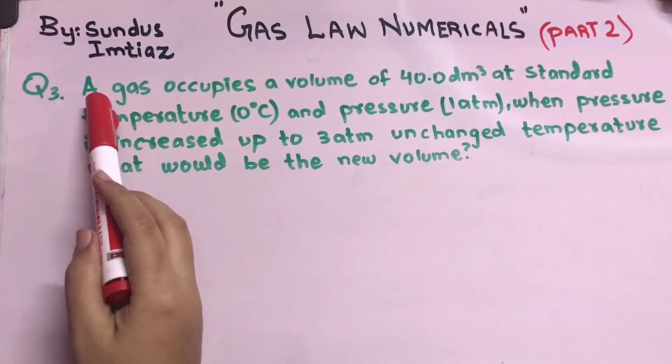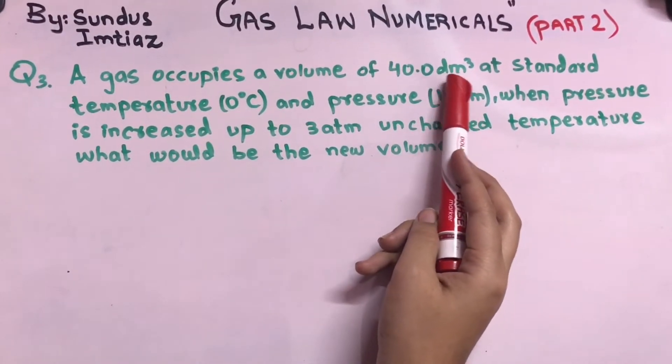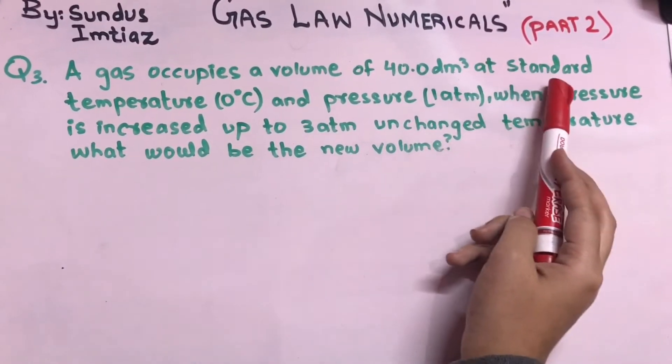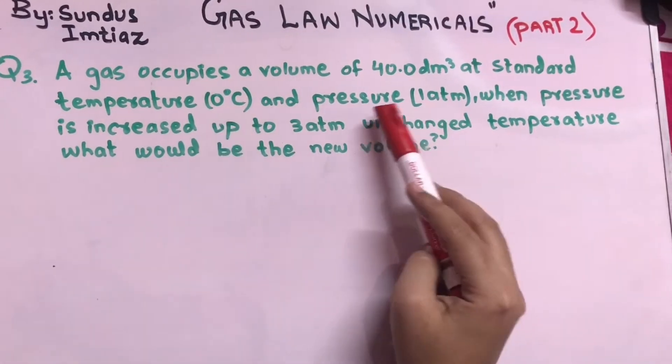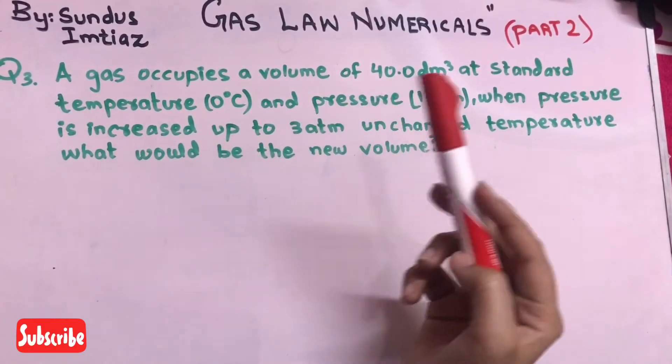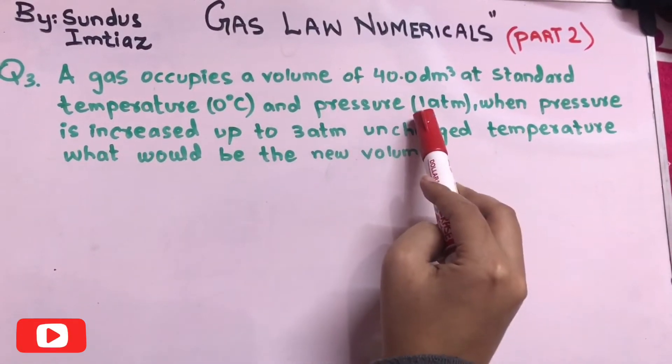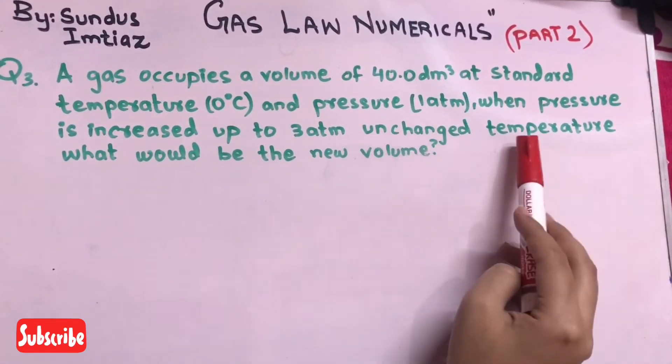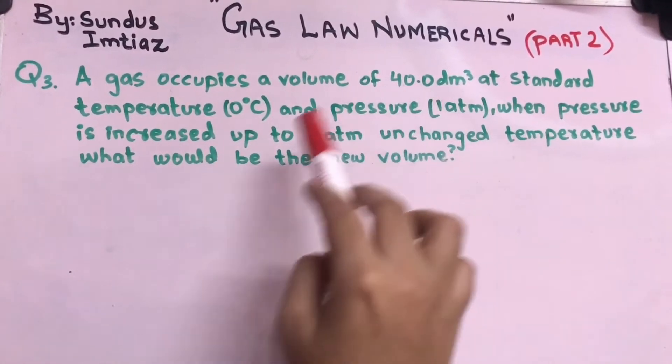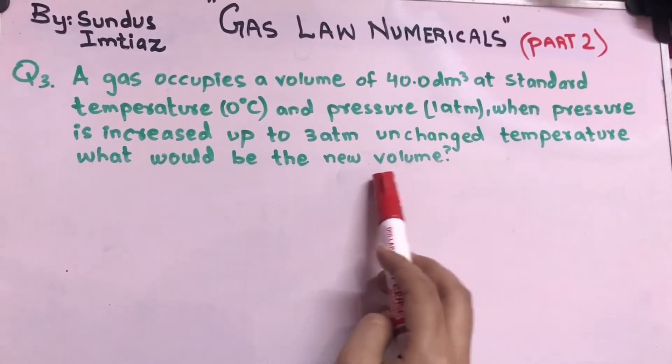The question says a gas occupies a volume of 40 decimeter cube. You have to remember that decimeter cube is a unit of volume, so 40 decimeter cube is given at standard temperature zero degree centigrade, pressure is 1 atm. When pressure is increased up to 3 atm, these are the p1 and p2. Now unchanged temperature, what does it mean? Unchanged temperature means in this numerical the temperature is constant.